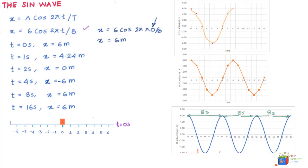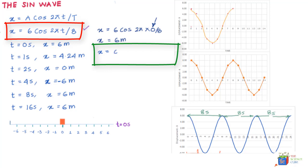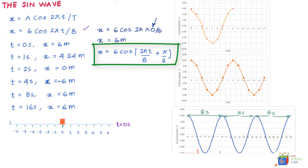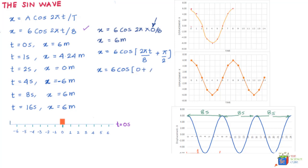What if we modify the equation to X = 6 cos(2πt/8 + π/2)? Substituting t = 0: X = 6 cos(0 + π/2) = 6 cos(90°) = 6 × 0 = 0 meters. This is indeed true — at t = 0, the mass is at its equilibrium position, X = 0. So this modified equation correctly describes the situation where the mass starts from the middle.